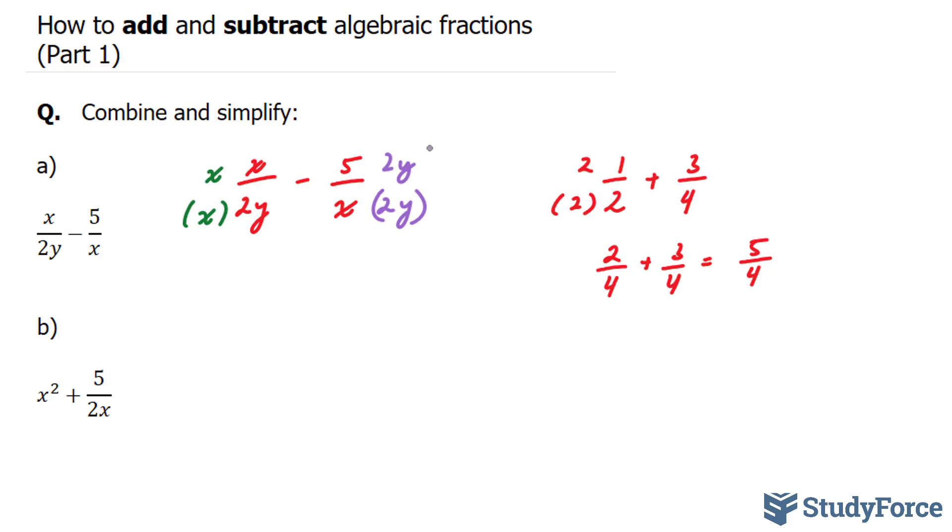And here's what happens. We end up with x times x which is x squared. This becomes 2xy, or you can write it as 2yx, it doesn't matter,